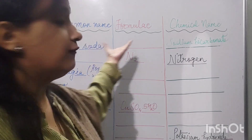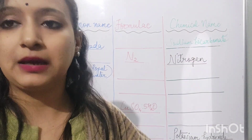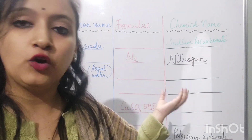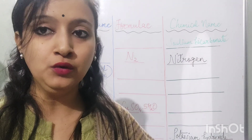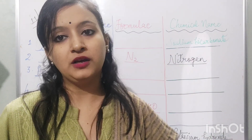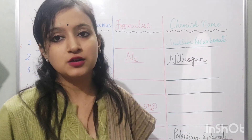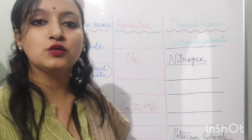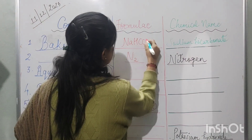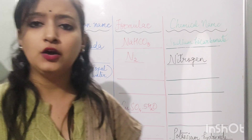What is its chemical formula? You must be very well aware of it — it is a very important formula from the board's and competitive exams' point of view. The chemical formula of sodium bicarbonate, or sodium hydrogen carbonate, is NaHCO₃.